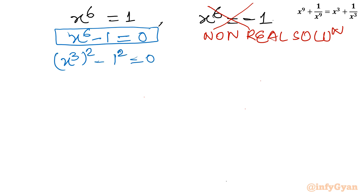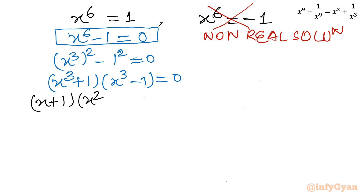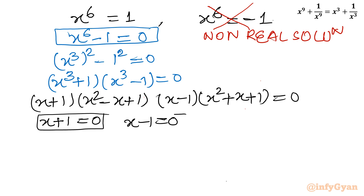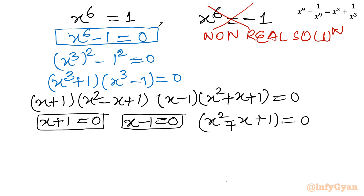Now I consider the first equation: x⁶ - 1 = 0. I can write x⁶ as (x³)² and 1 as 1². So applying a² - b² = (a+b)(a-b), we get (x³ + 1)(x³ - 1) = 0. For x³ + 1, I apply a³ + b³ = (a+b)(a² - ab + b²), giving (x+1)(x² - x + 1). For x³ - 1, I apply a³ - b³ = (a-b)(a² + ab + b²), giving (x-1)(x² + x + 1).